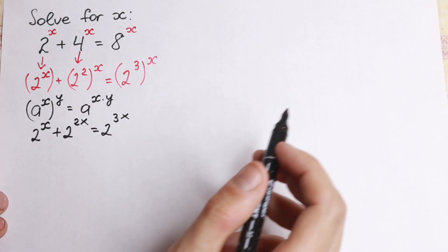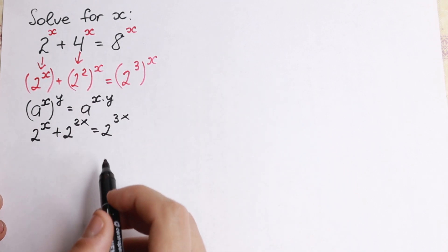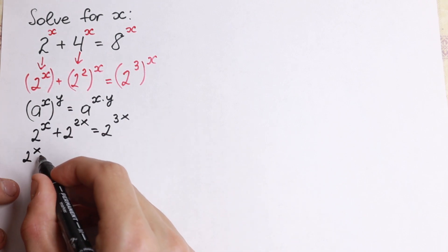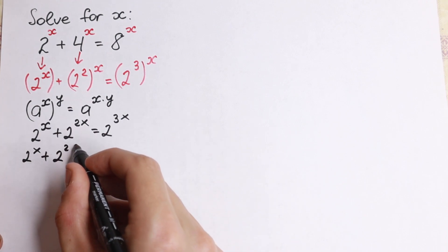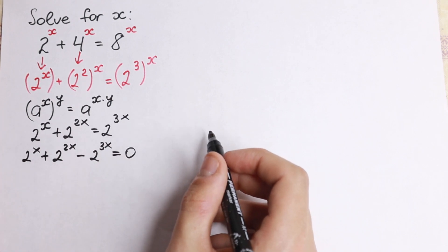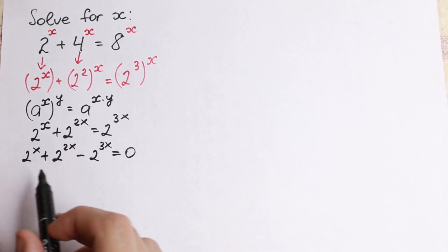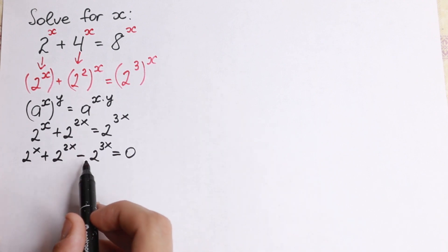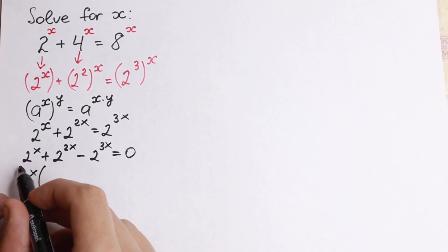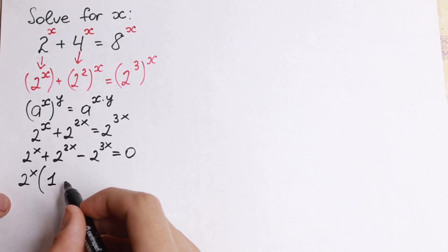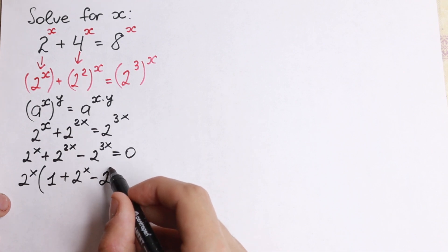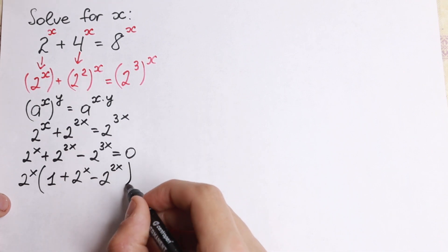We move 2 to the power 3x to the left hand side so the right hand side equals 0. We get 2 to the x plus 2 to the power 2x minus 2 to the power 3x equal to 0. As we can see, we can factor out 2 to the x, leaving 1 plus 2 to the x minus 2 to the power 2x in parentheses.